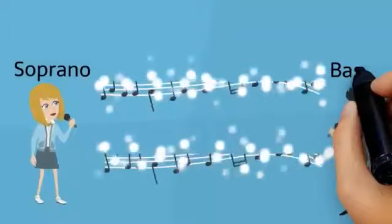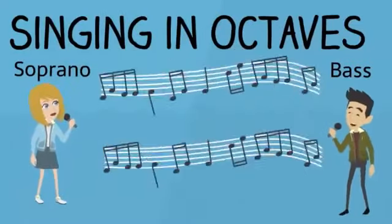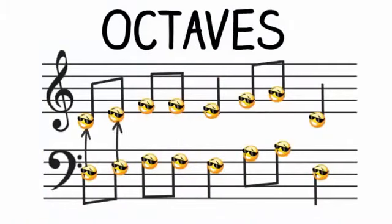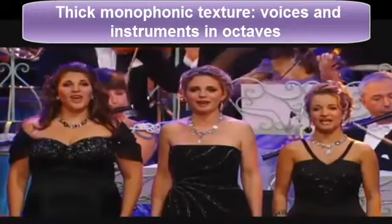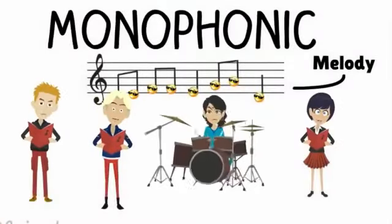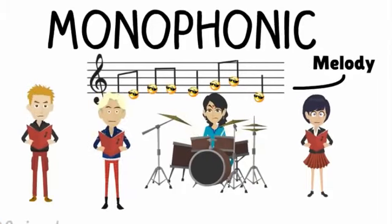It also doesn't matter if the voices or instruments are on the exact same frequency or if they are singing in octaves. An octave is the distance between two musical pitches that sound almost the same but one is higher and one is lower. It also doesn't matter if drums are present or not. In most cases, drums — the rhythmic layer — are neither melody nor harmony and therefore are generally not considered when determining texture type.